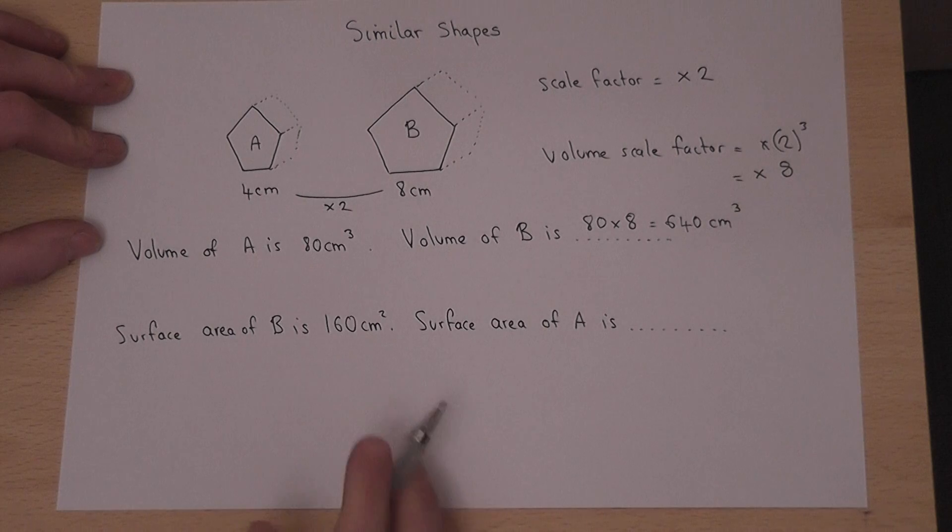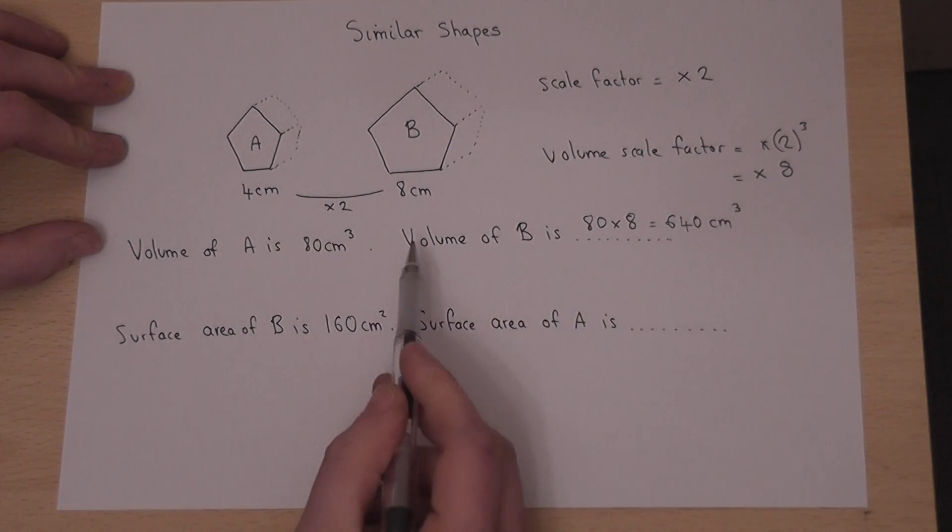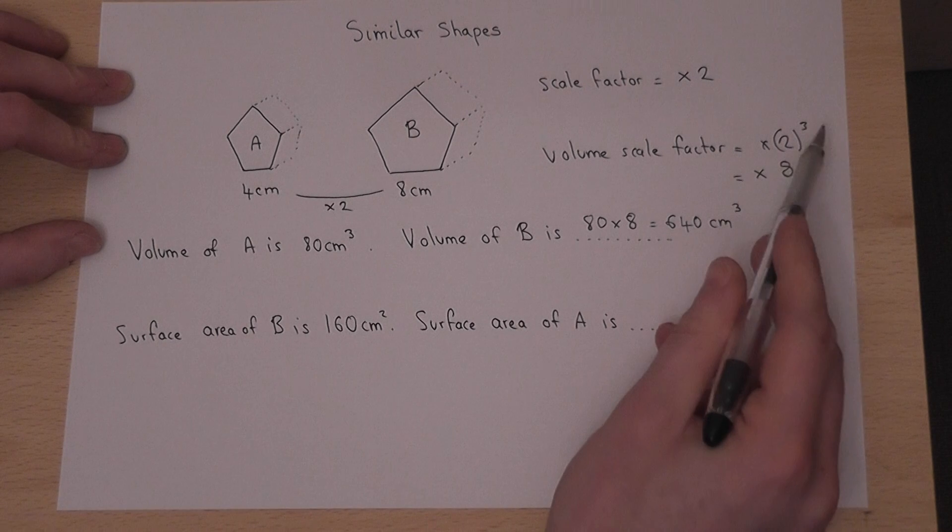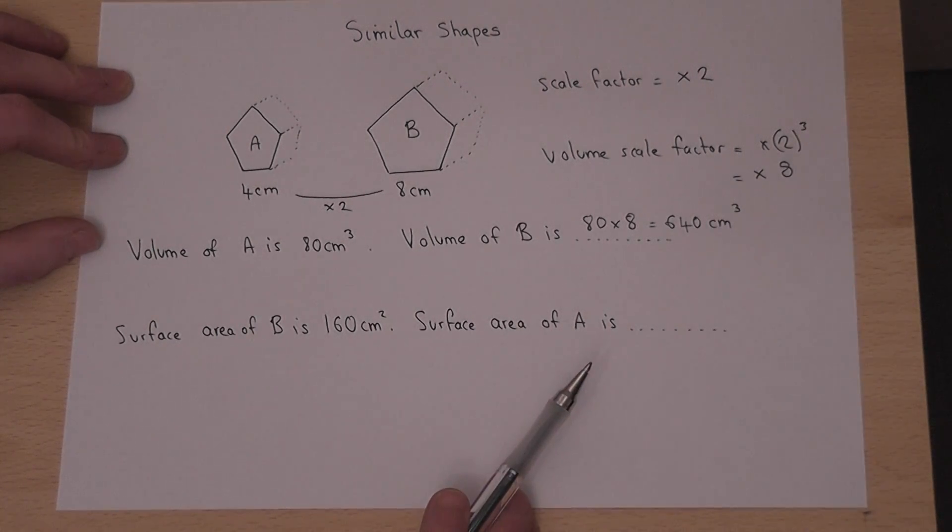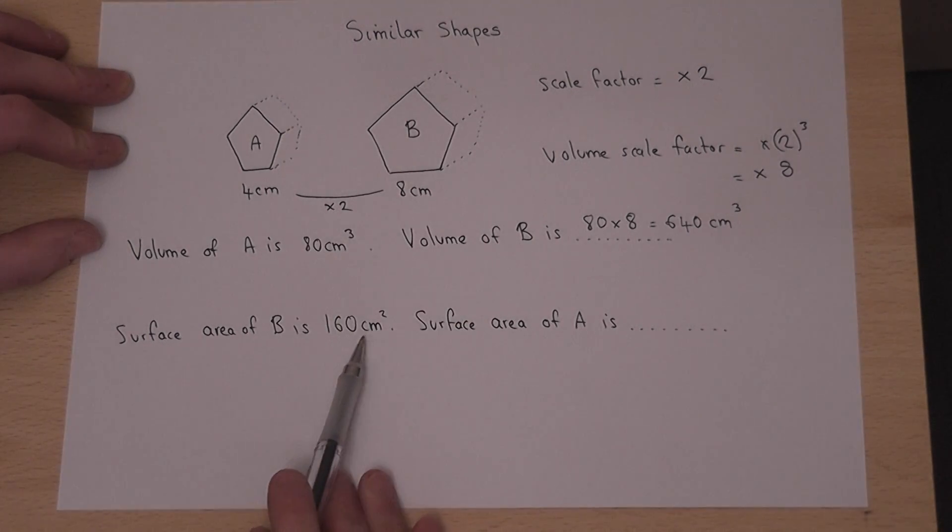So again, if we know the side scale factor to find the volume scale factor we work out the ratio cubed. Now in part 2 we're told that the surface area B is 160 centimeters squared.